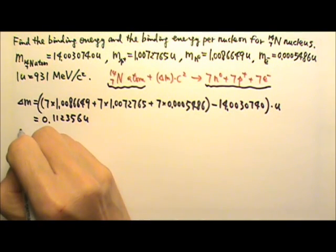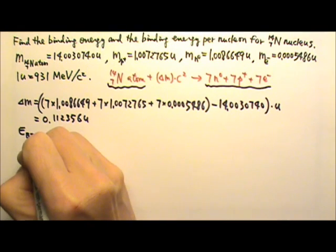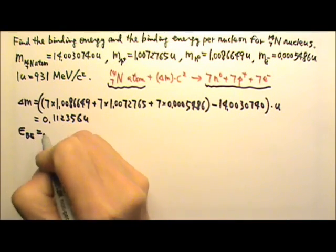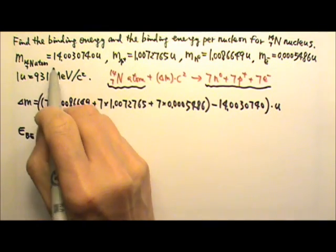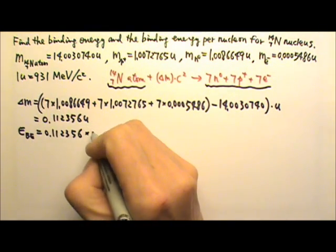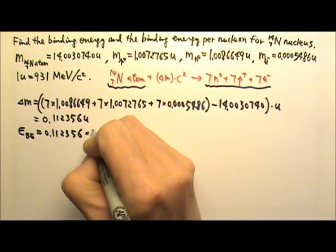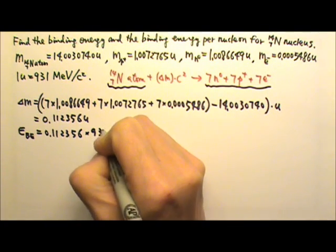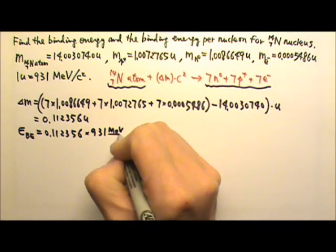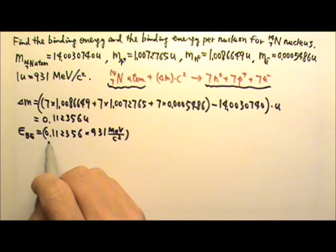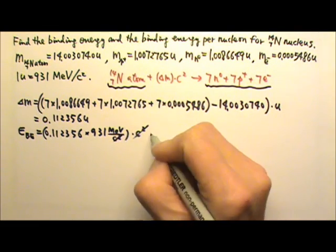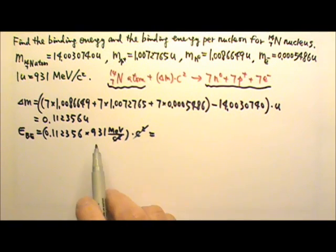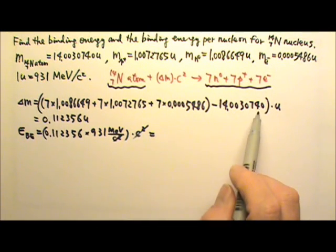This means the binding energy would equal to 0.112356U, which is 931 mega eV over c squared. And since the binding energy is delta m times c squared, the c squared will cancel. Now we can round, but before we find this number here, we cannot round any of these numbers over here.